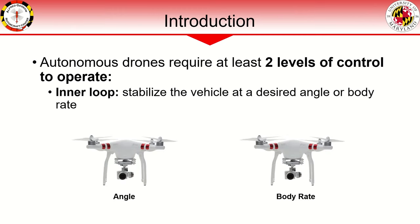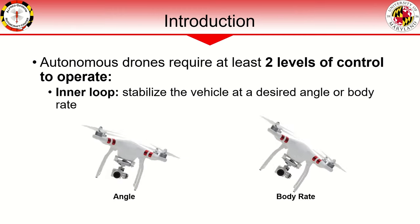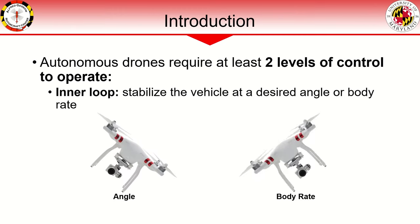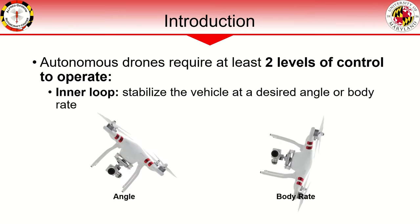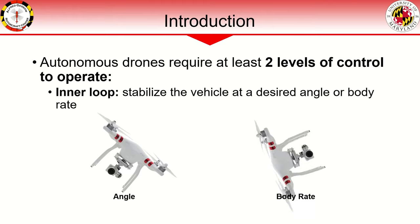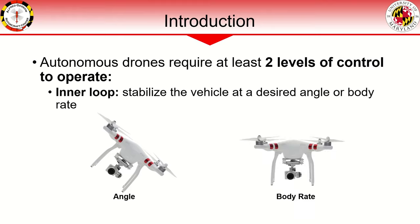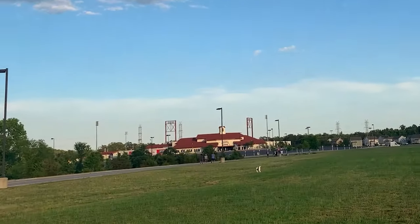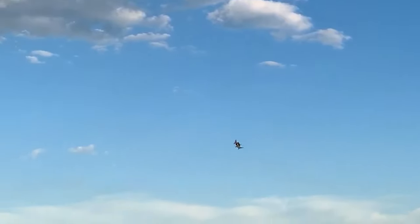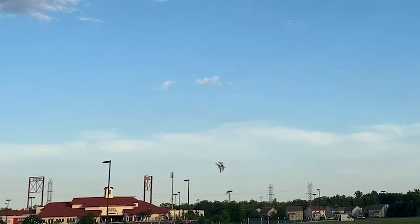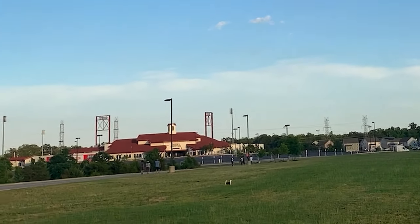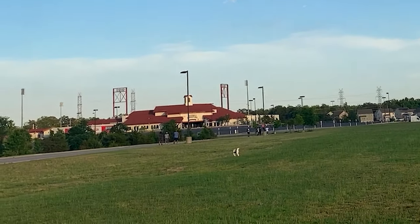The inner loop controller is what stabilizes the vehicle, either at a specified angle or vehicle body rate. Drones are inherently unstable — they require active stabilization to the motors to keep them in the air at all. Without this, even the most skilled of pilots could not keep them in the air for more than a few seconds.